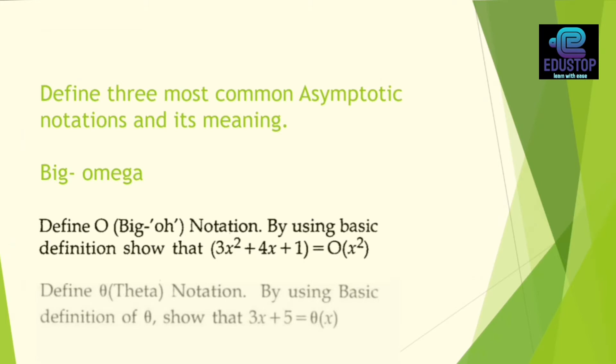Next, you can define three most common asymptotic notations and their meanings. So I will tell you about three asymptotic notations: big omega, big O, big theta. Next question: define big O notation and by using basic definition show that 3x square plus 4x plus 1 is equal to big O of x square. So you should solve this. This question you can ask for omega, O, and theta. Example problems, there are also problems and these will be asked based questions.